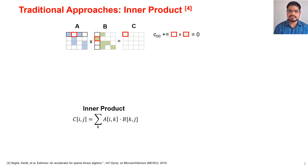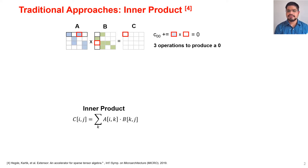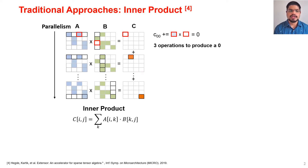In the second cycle, B has the smallest index but A has a zero, so we don't perform any math. And in the last step, A has a non-zero and B has a zero, so again we don't perform any math. Thus even with three operations we produce a single output element which is zero. The parallelism comes from the fact that different output elements can be produced in parallel.